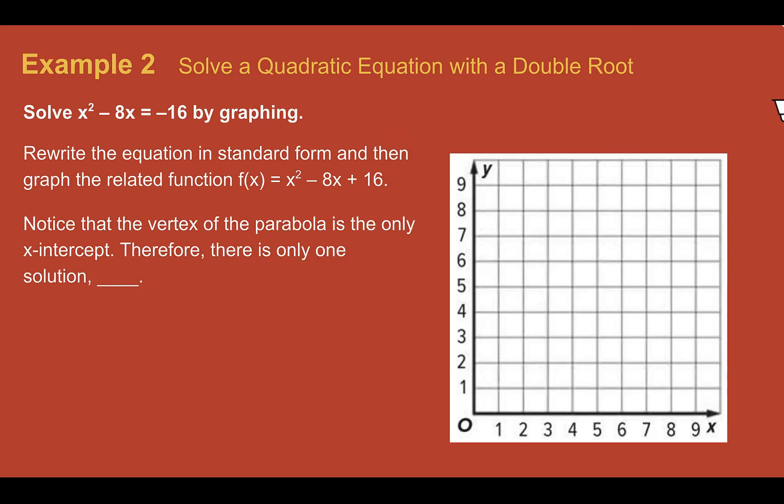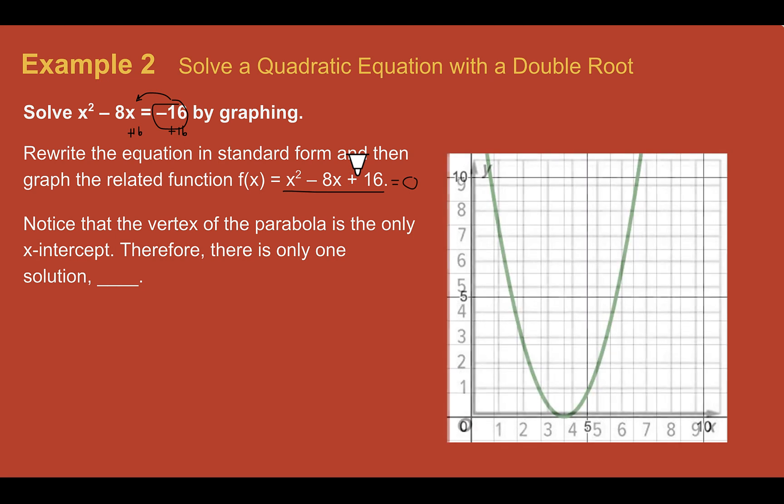Example two, solve a quadratic equation with a double root. So let's solve x squared minus eight x equals negative 16 by graphing. First, what we're going to need to do, we're going to rewrite this in standard form. So I don't want this negative 16 over on that. I need it over on the same side as x squared so that it's in the format for me to graph. So I'm going to do that by adding 16 to both sides. And then I end up with x squared minus eight x plus 16. And then this would really just be equal zero because I now have nothing on the right. I'm just going to graph x squared minus eight x plus 16. And it would look like this.